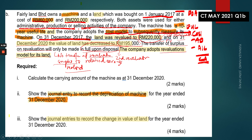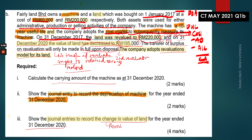Let's look at the requirements. Number one, calculate the carrying amount of the machine as at 31st of December 2020. Then show the journal entry to record depreciation for the machine. Lastly, for four marks, show the journal entry to record the change in value of the land — specifically the revaluation deficit from the second revaluation on 31st of December 2020.